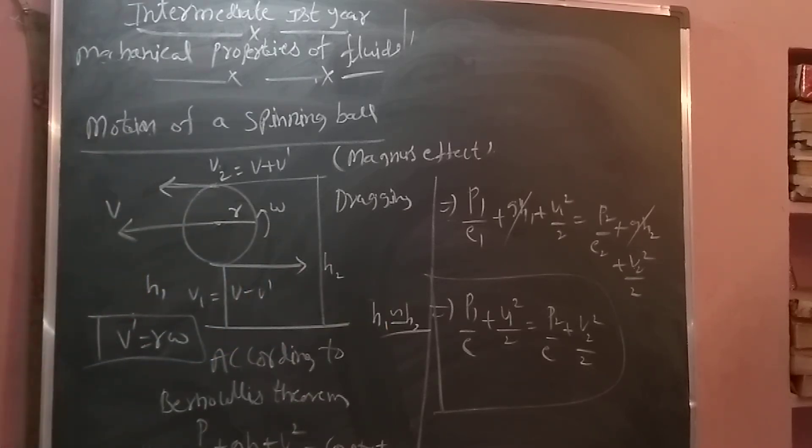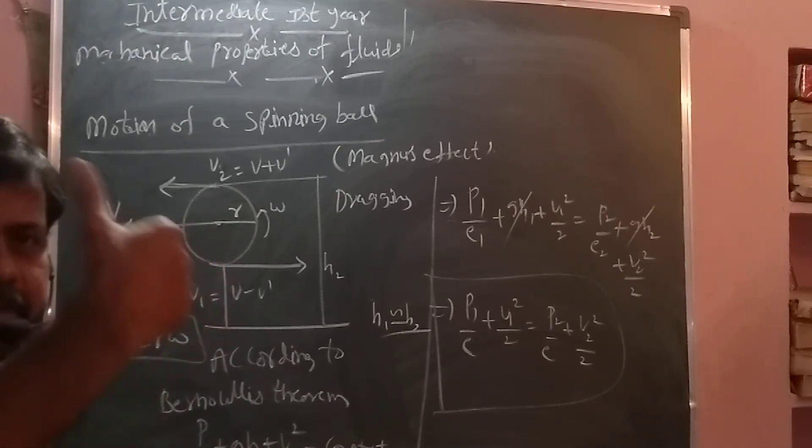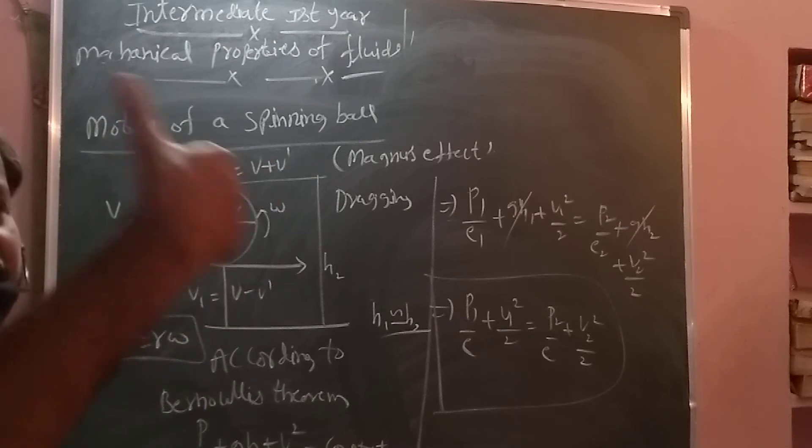So in that way we are getting aerodynamic lift. Here what happens extra? Dragging occurs. Not only dynamic lift. In the case of aeroplane wing, only dynamic lift. But in this case is dynamic lift and also dragging.